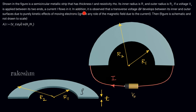In addition, it is observed that a transverse voltage delta V develops between its inner and outer surfaces. This voltage develops due to purely kinetic effects of moving electrons in this strip.